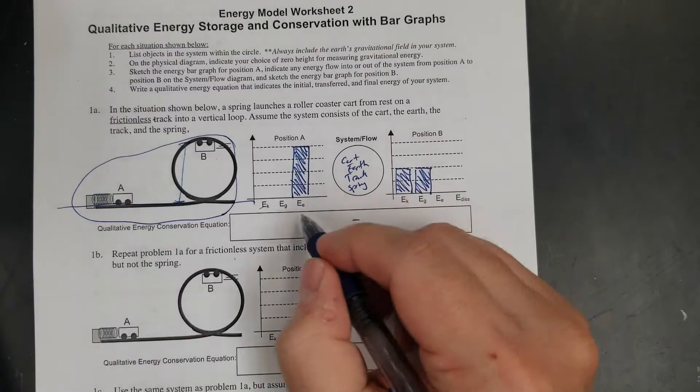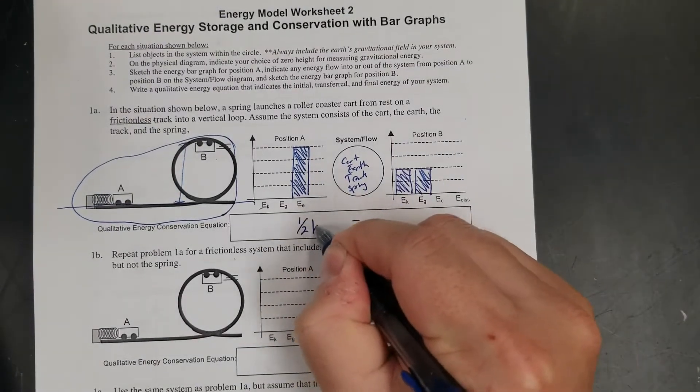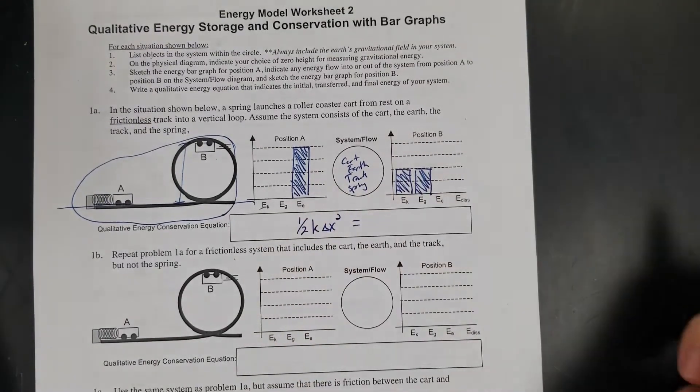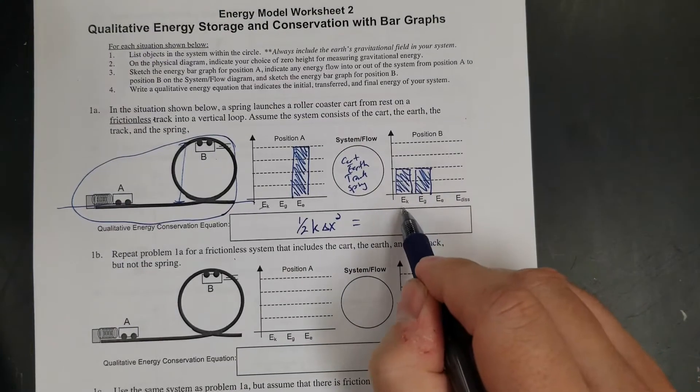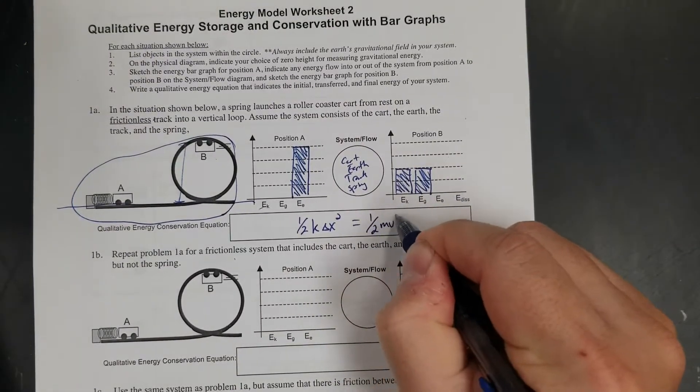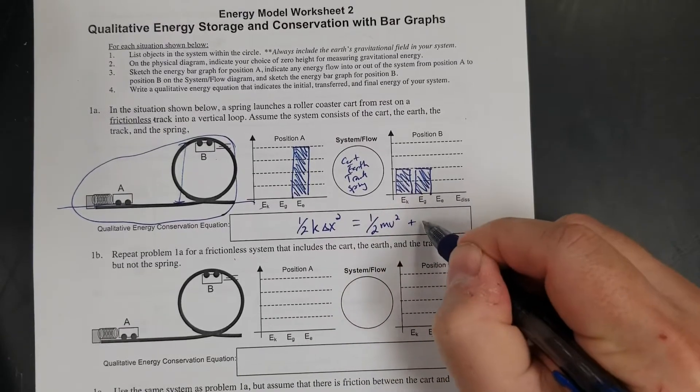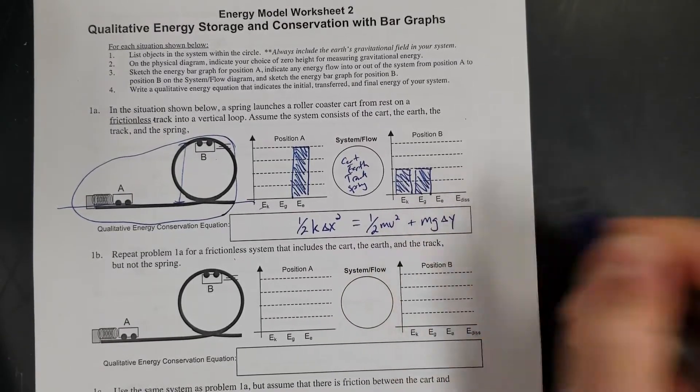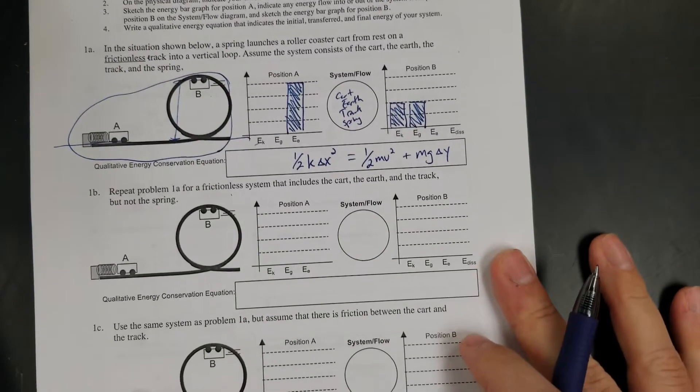Let's write my equation. There's elastic: one-half kx squared. And on this side, there's kinetic and gravitational. So kinetic is one-half mv squared plus gravitational is mg delta y.